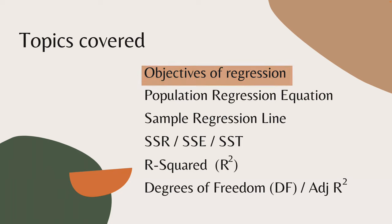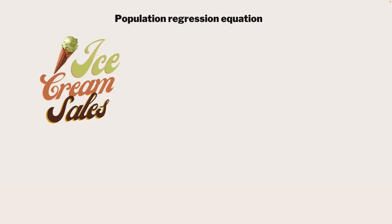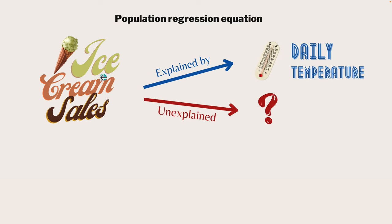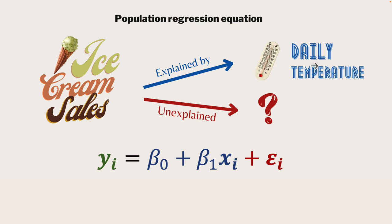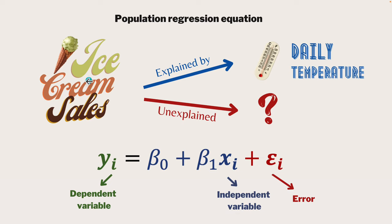Now we look at how we're going to use algebra to map out this exploration. Let's look at the population regression equation. To simplify things, let's just look at explaining ice cream sales using one explanatory variable - daily temperature - forgetting about rainfall and school holidays for the moment. The y on the left-hand side is our dependent variable - ice cream sales. Why is it dependent? The ice cream sales will depend on the daily temperature and not the other way around. The daily temperature is our independent variable, that's x, and the error term relates to everything that's still unexplained.